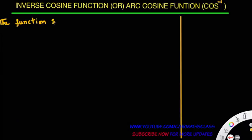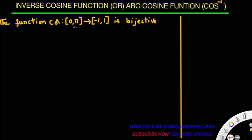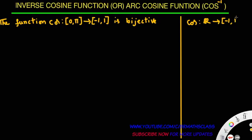Definition. The function cos from closed interval [0, π] to closed interval [-1, 1] is a bijective function. Cos function domain is taken as closed interval [0, π]. Actually, from trigonometry, we know that cos is a function whose domain is the set of all real numbers, with range the closed interval [-1, 1]. This is the domain and range of the cos function.